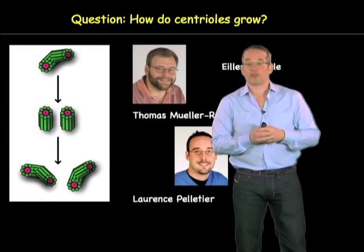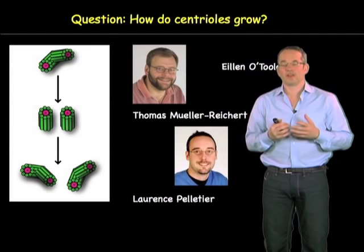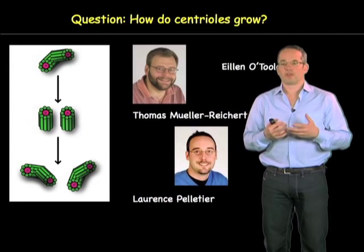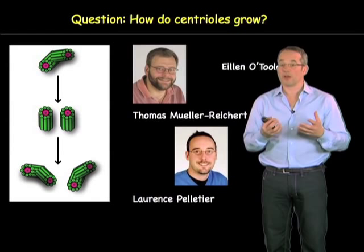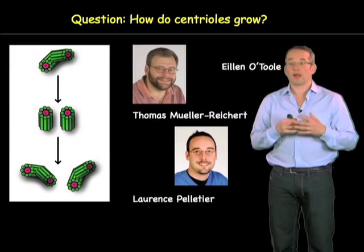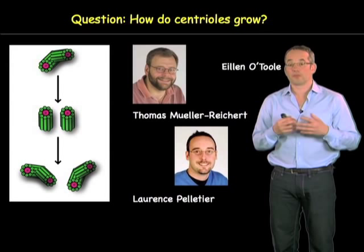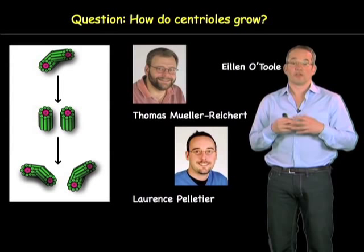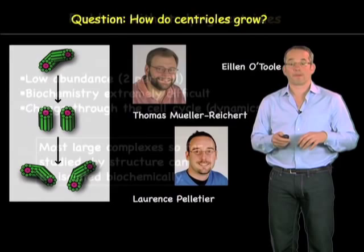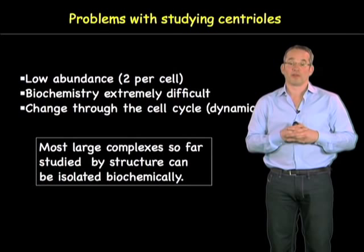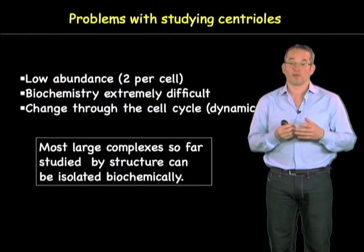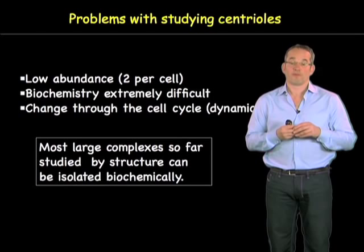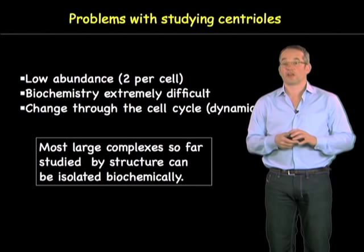One of the questions that's always been interesting is how do centrioles grow? Once per cell cycle, each centriole makes a duplicated daughter centriole — just like DNA, where you also make one copy of each strand. The work of three people sorted this problem out in C. elegans embryos at a morphological level: Thomas Theodor Reichardt and Eileen O'Toole, two electron microscopists, and Laurence Pelletier, a cell biologist. The problems with studying centrioles are that they're extremely low abundance — only about two per cell — the biochemistry is extremely difficult, and they change through the cell cycle.